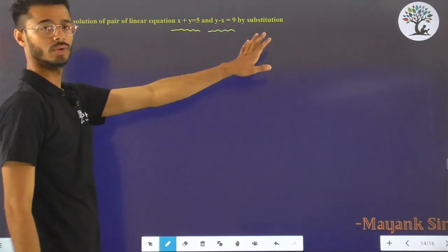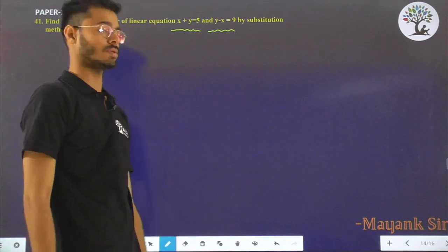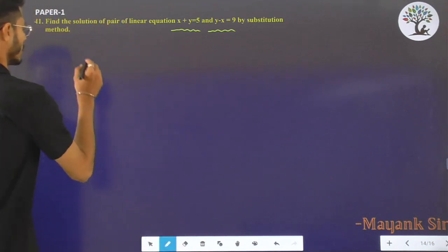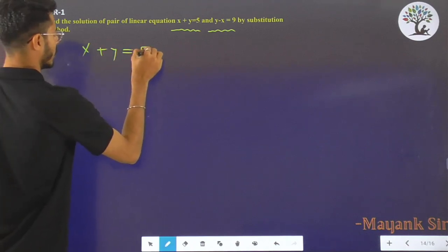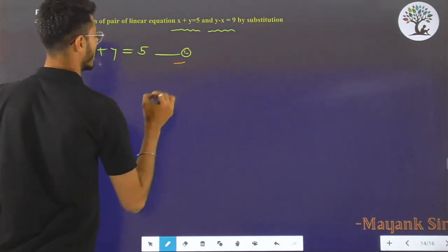We have to use the method of substitution. So here the question is x + y = 5, equation number 1.